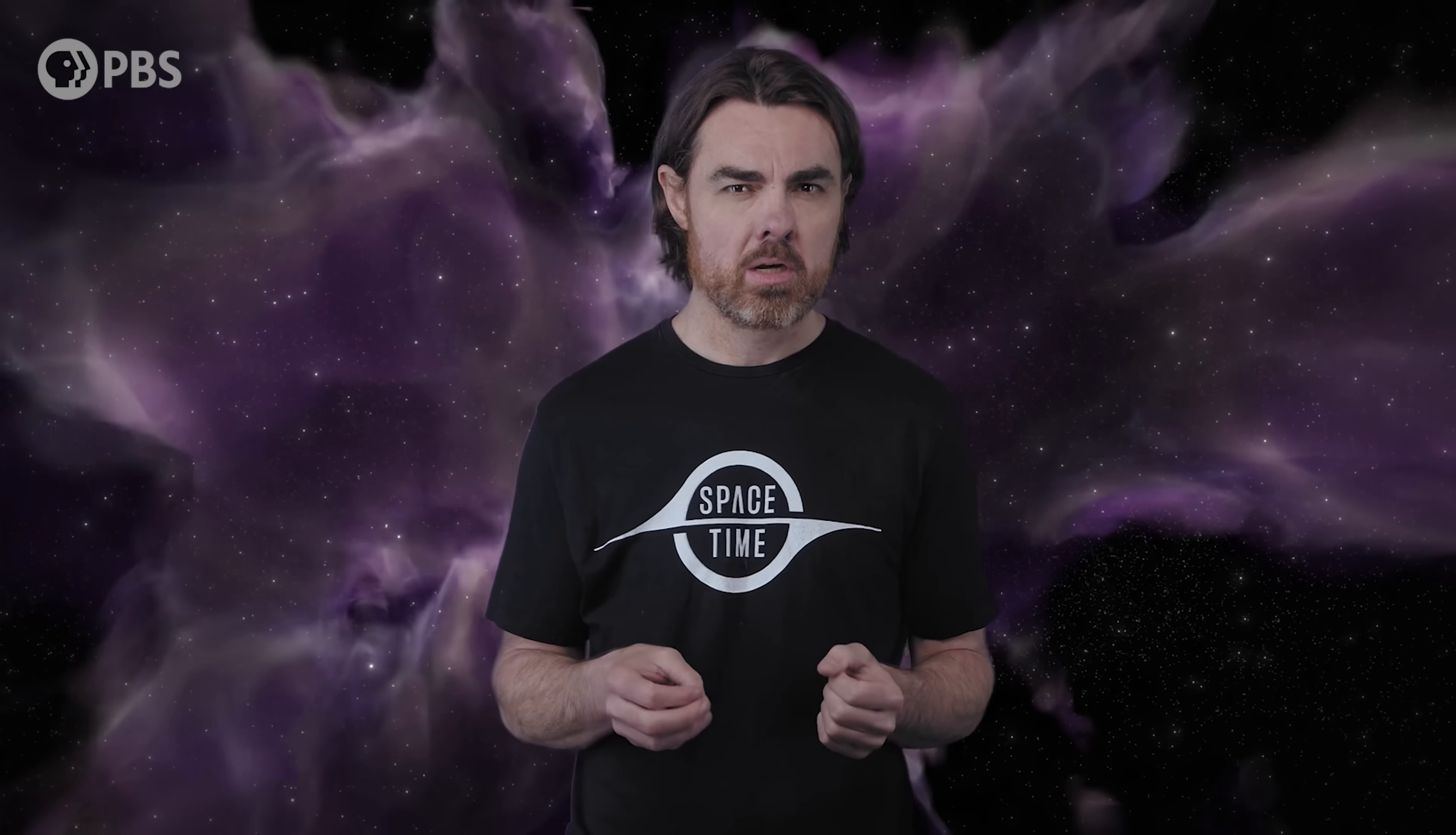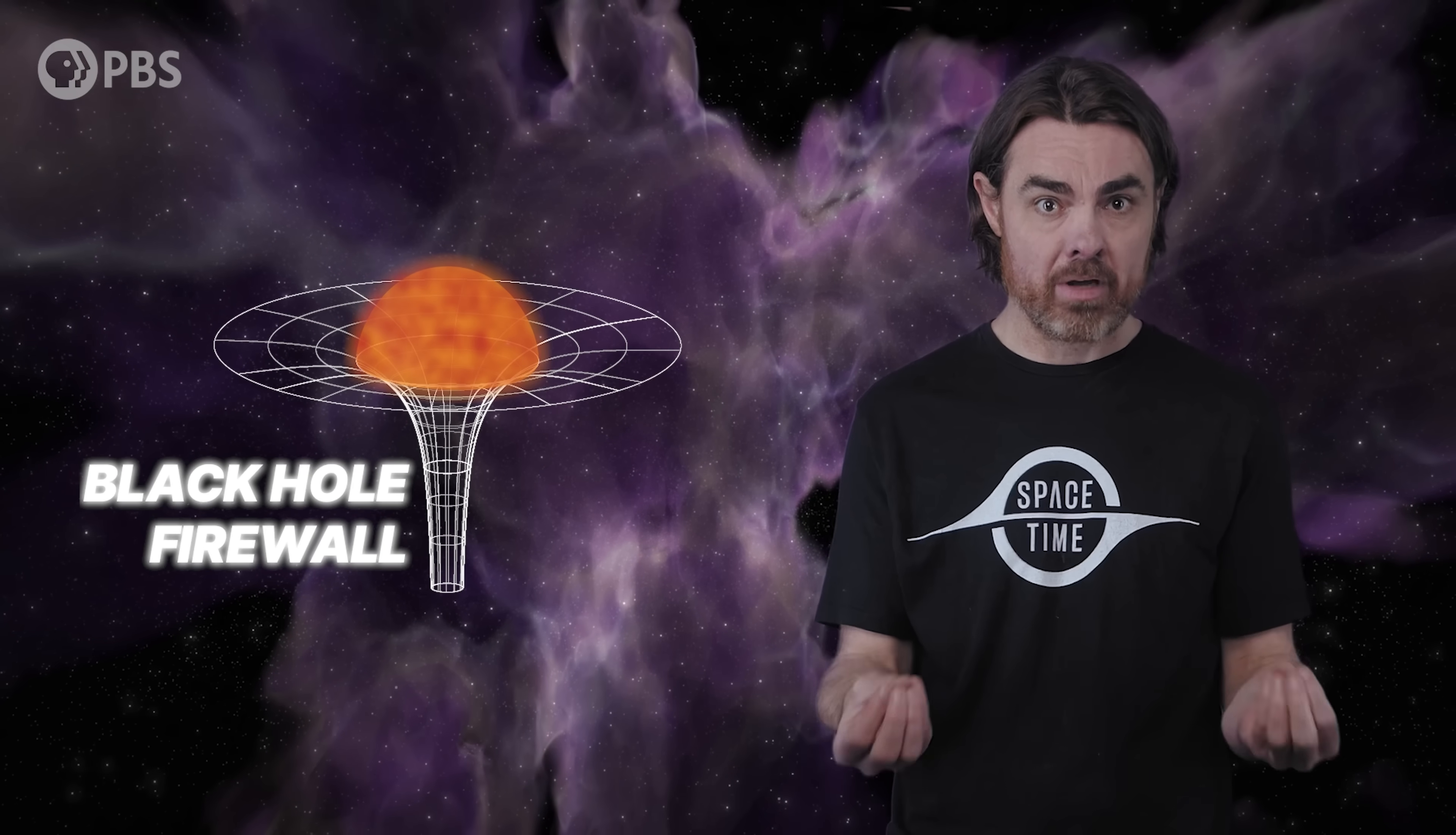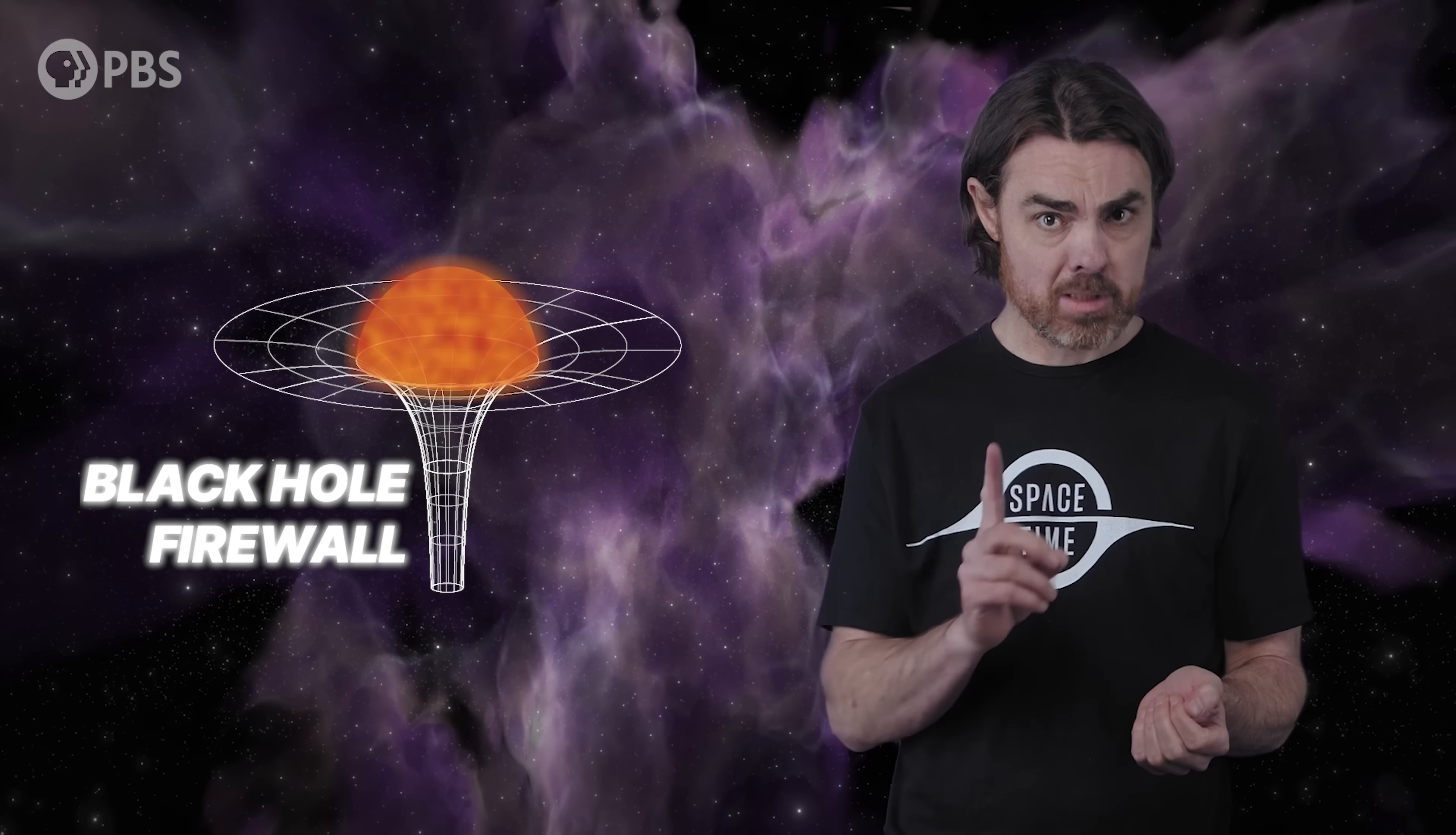Black hole complementarity is by no means the accepted solution to the black hole information paradox. We haven't talked about black hole firewalls yet, in which an extreme energy screen just above the event horizon fries anything that tries to enter, eliminating any duplication of qubits, but also violating the equivalence principle. In an episode coming very soon we'll see why some physicists think that the firewall must exist, and also why the firewall may not free us from the strangeness of black hole complementarity, or vice versa.